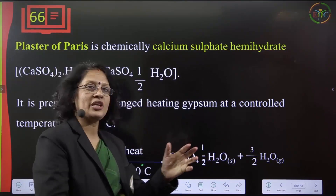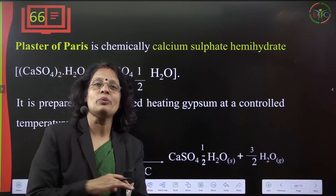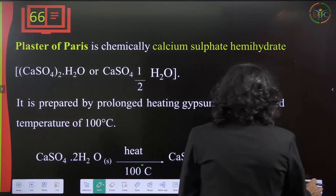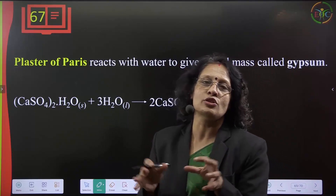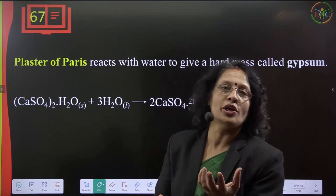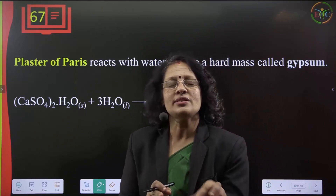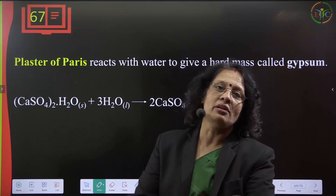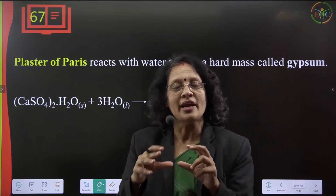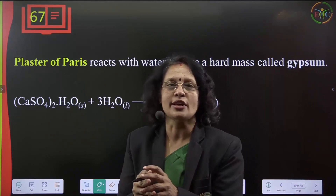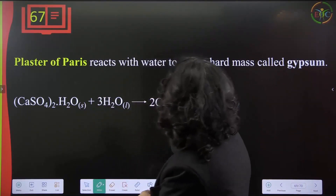Plaster of Paris is used for making idols and for setting fractured bones. When a bone is fractured, a cast of plaster of Paris is applied so the bone doesn't move and joins naturally in the correct direction. Plaster of Paris reacts with water to give a hard mass called gypsum.